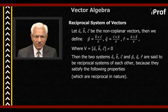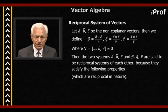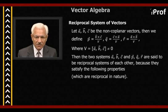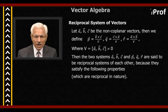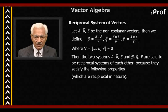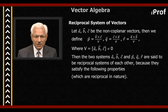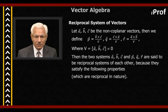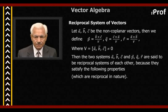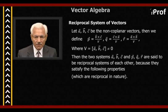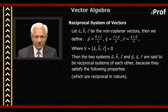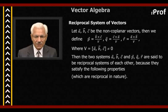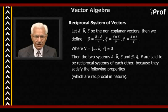Then the two systems — A, B, C (the first system) and P, Q, R (the second) — are said to be reciprocal systems of each other, because they satisfy the following properties which are reciprocal in nature.